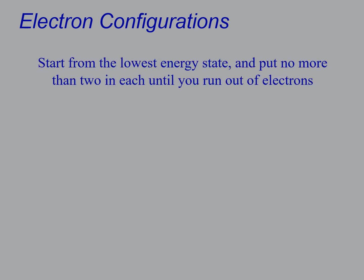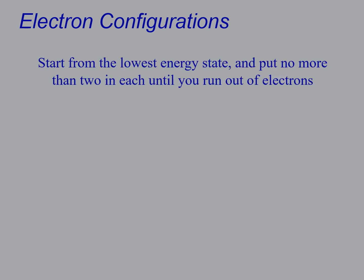And they're actually pretty straightforward to do. So you start from the lowest energy state which is 1s and then put no more than two in each until you have assigned all of the electrons a type.